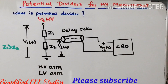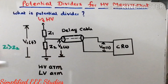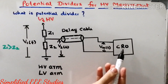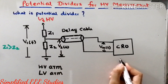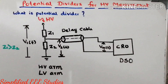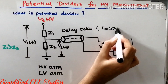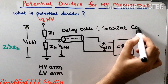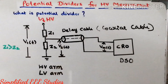The voltage across Z2, that is the low voltage arm, will be directly connected to measurement devices such as a CRO or DSO, through a delay cable, also known as a coaxial cable. You will then be getting the sample signal at the CRO or DSO.